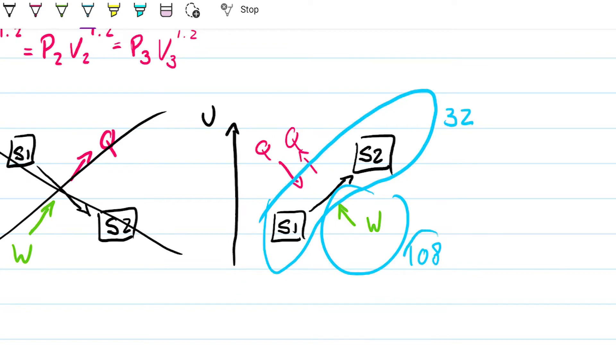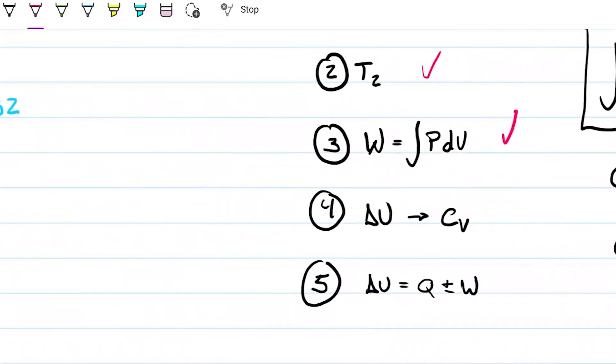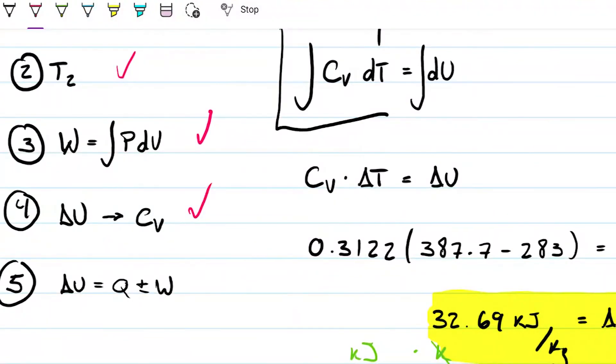We cannot create or destroy energy, so this extra bit of energy being given to the system needs to leave in the form of heat. So I can be 100% sure that heat is not entering my system, it's instead leaving, and the amount that's leaving is the difference between the 108 and the 32. So to finish it off.